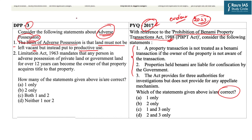To answer this, understand what adverse possession means. Imagine you had a land which you were not using for the last 15 to 20 years, and this land was being occupied or used by someone else while you were abroad paying no attention to it. After 20 years when you come back and claim it was your land, you cannot actually claim it. The person in possession for 15 to 20 years would be getting ownership rights. The reason for this law is that land must not be vacant — it is a scarce resource that must be utilized productively. Hence statement one is correct.